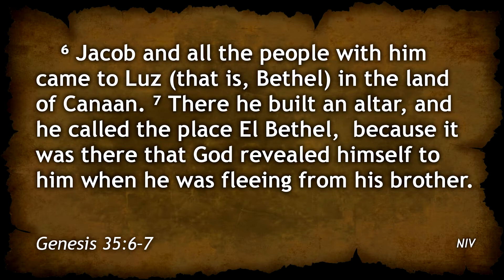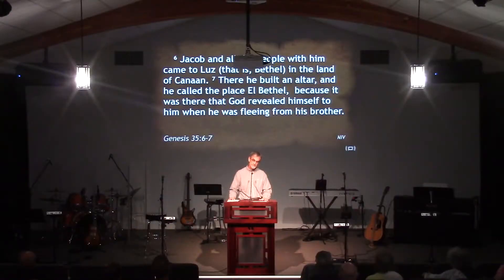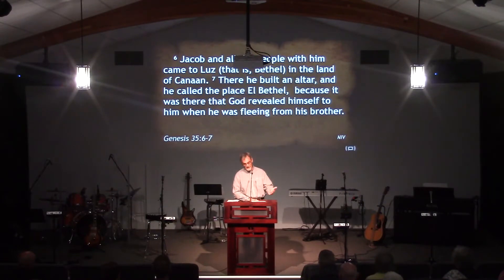Jacob and his group arrived safely at Bethel — that special place where he had had that unusual dream of the stairway to heaven, where the Lord had spoken to him, promising to take care of him and bring him back to the land of Canaan. Jacob had taken the rock he slept on that night and set it up as a pillar to commemorate the spot, giving the name Bethel — meaning house of God — to the place. Now Jacob builds an altar and gives it the new name El Bethel, meaning God of the house of God. Jacob's connection with the Lord has become more relational and personal. His focus is now on the God of this place rather than on the place itself.